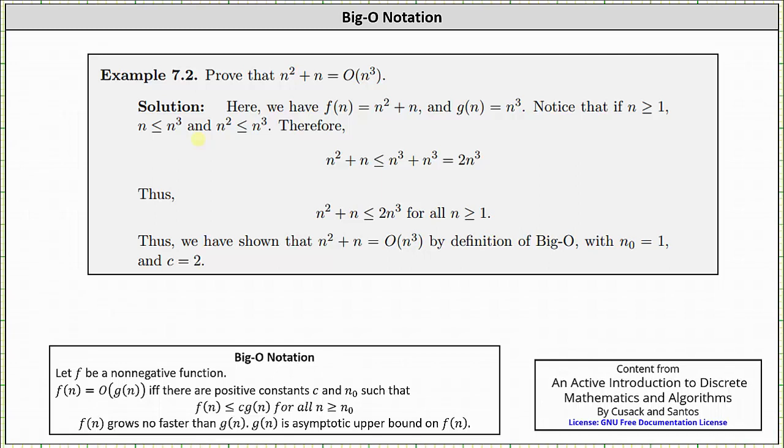Therefore it follows that n² + n is less than or equal to n³ + n³. In order to form this inequality, we replace n² and n with n³. And n³ + n³ is equal to 2n³.